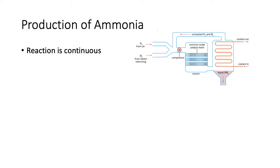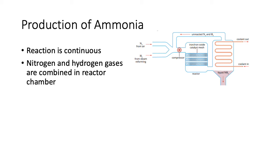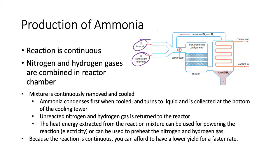The reaction is continuous — that's one of the important things to remember, which means rate is more important than yield. The nitrogen and hydrogen gases are combined in a reactor chamber. The mixture is continuously removed and cooled. As it passes through, NH3 is produced, but unreacted H2 and N2 are also present, and the mixture goes into a condenser tower.